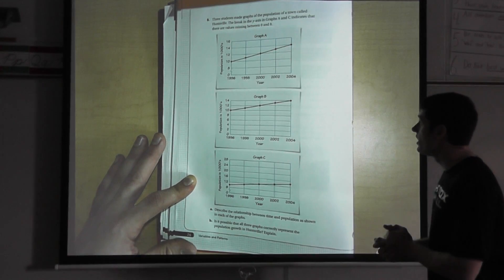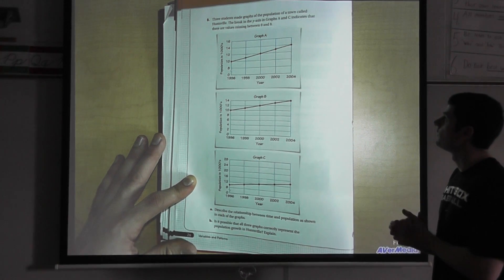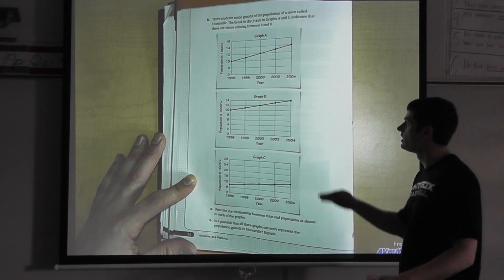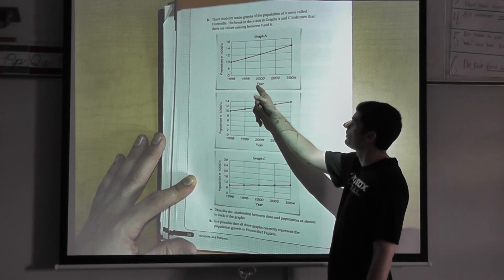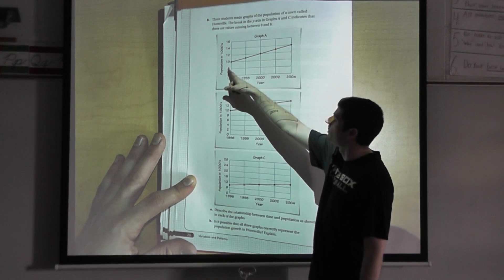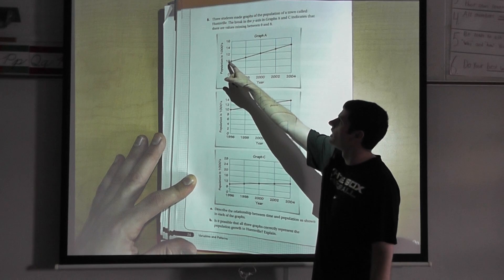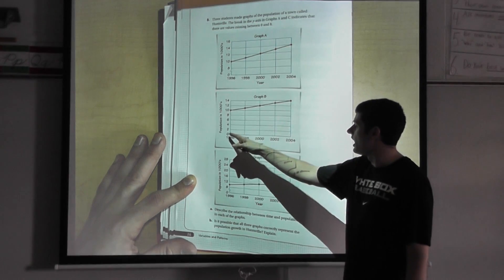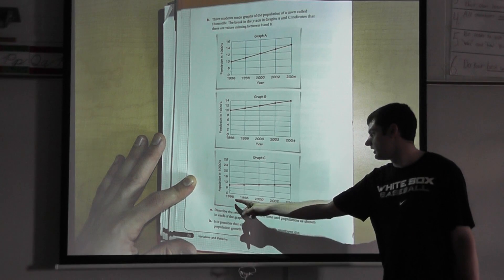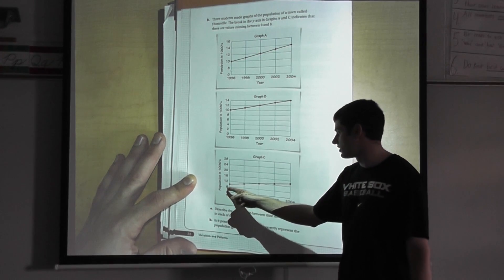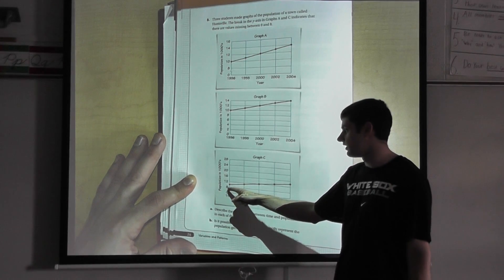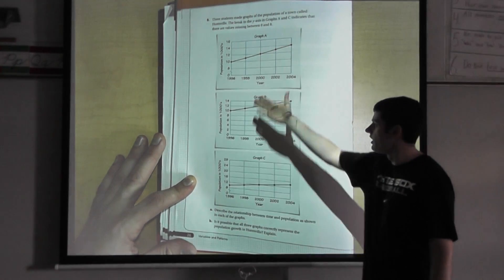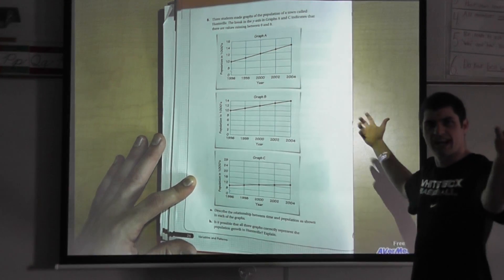All right. Question eight. Three students made graphs of the population of a town called Huntsville. The breaking of y-axis in graph A and C indicates that there are values missing between zero and eight. I'm going to look at graph A. I see that they're using a two-year interval for the years. Population is in thousands. They went by zero to eight, 10, 12, 14, 16. So there's an eight interval, and then two, four, six, eight. They're going by two each time after. In graph B, years are an interval by two, and the graph went up by two each time. Graph C, interval for years are by two. So the years are consistent, and this interval starts at zero to eight, with a little break, and then it goes up by four each time. So the information in the graphs, you see the year intervals are the same. Population on the side of the thousands is different.